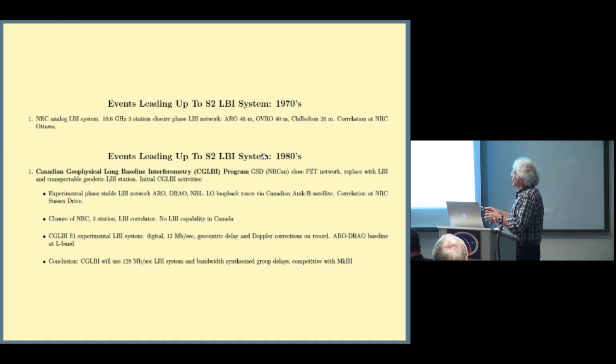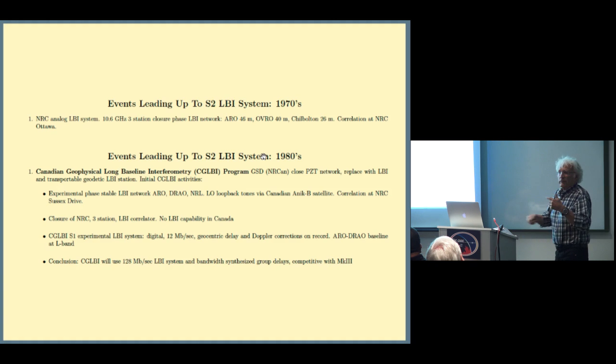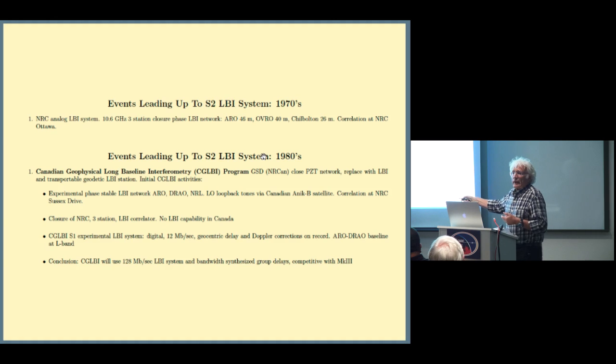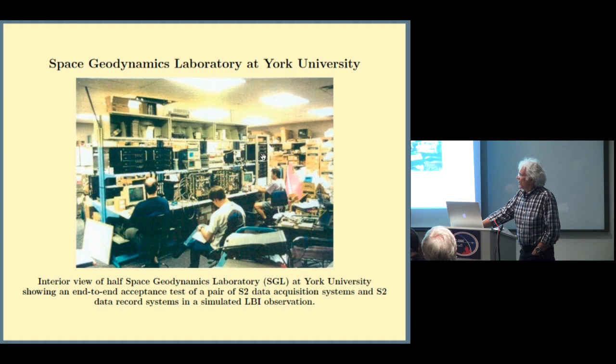The CGLBI program had to bite the bullet at that point and develop a digital system. We did this experimental one where we did delay, geocentric delay and Doppler corrections on record. The correlator was built at York, and the record terminals were built at Alan Yen's lab in University of Toronto. We had many successful experiments between ARO and DRAO at L-band. This method had a lot of very serious drawbacks, and we didn't pursue it either. We came to the conclusion we needed to move forward to a 128 megabit per second system competitive with the Mark III for future geodetic work in Canada.